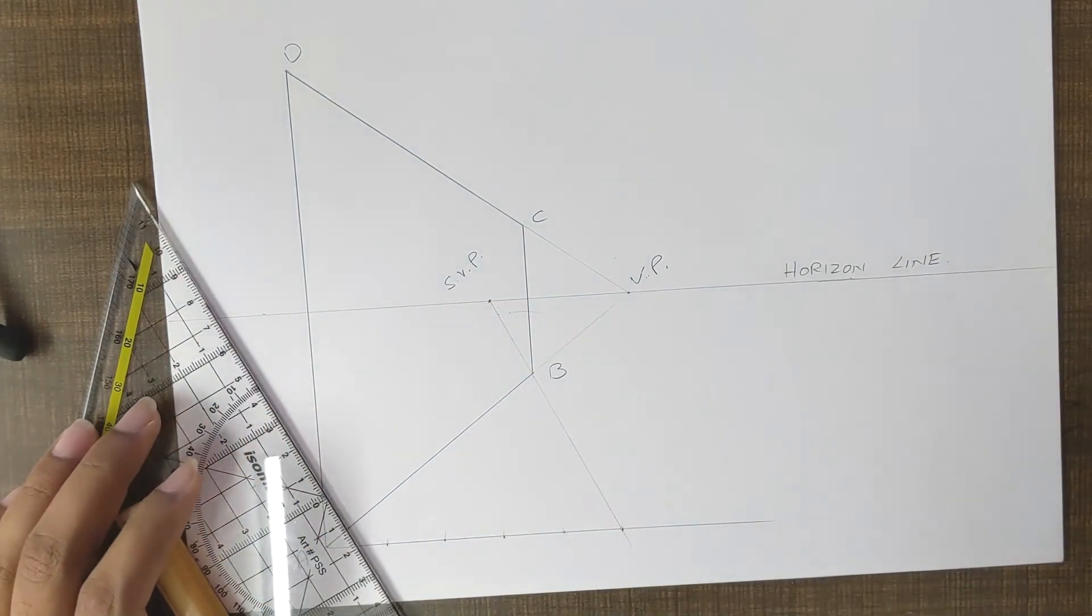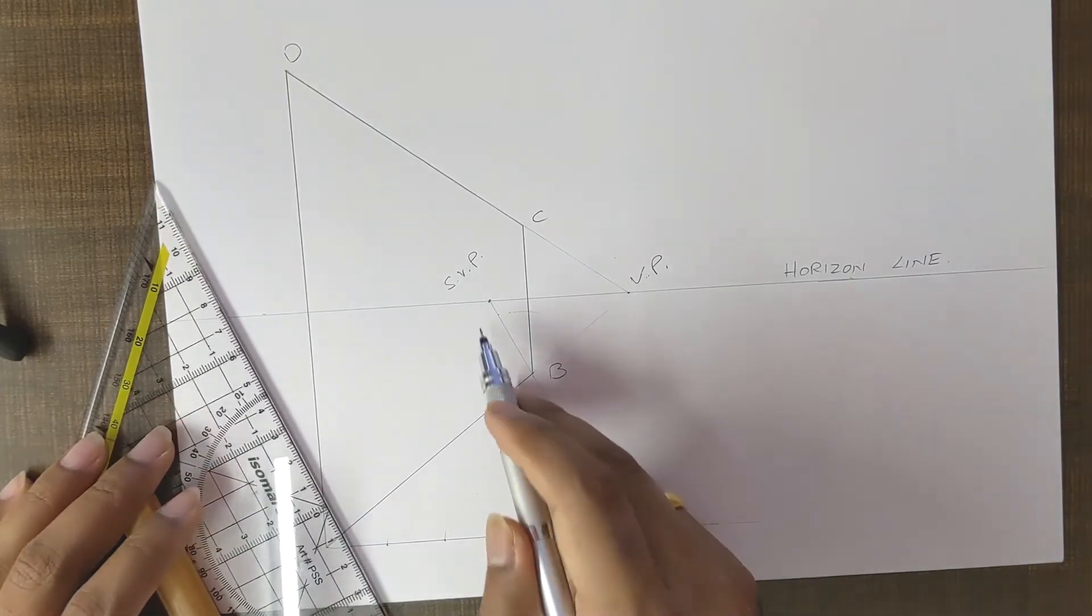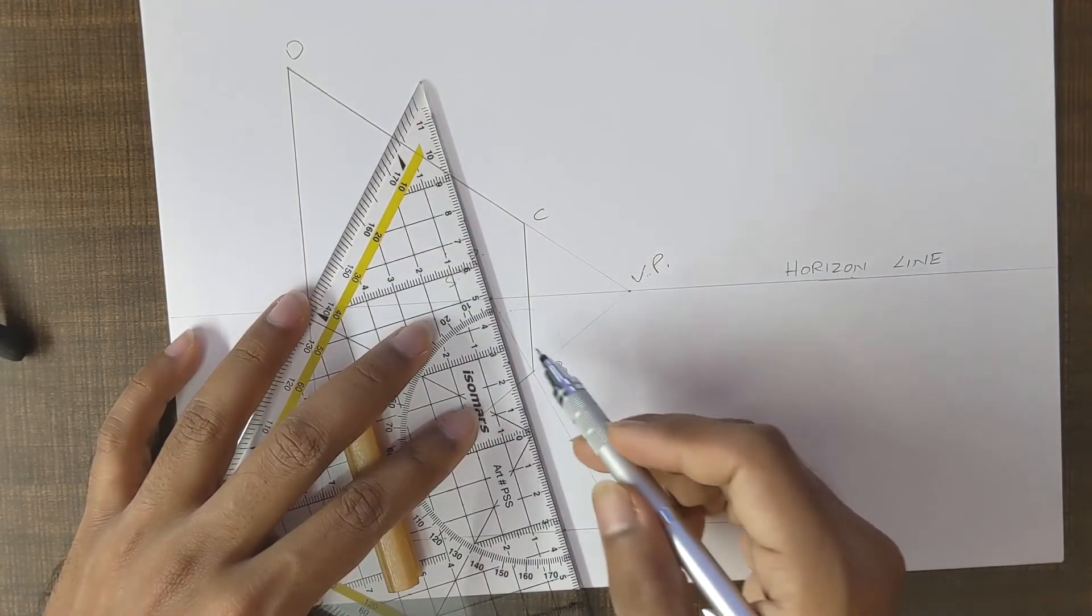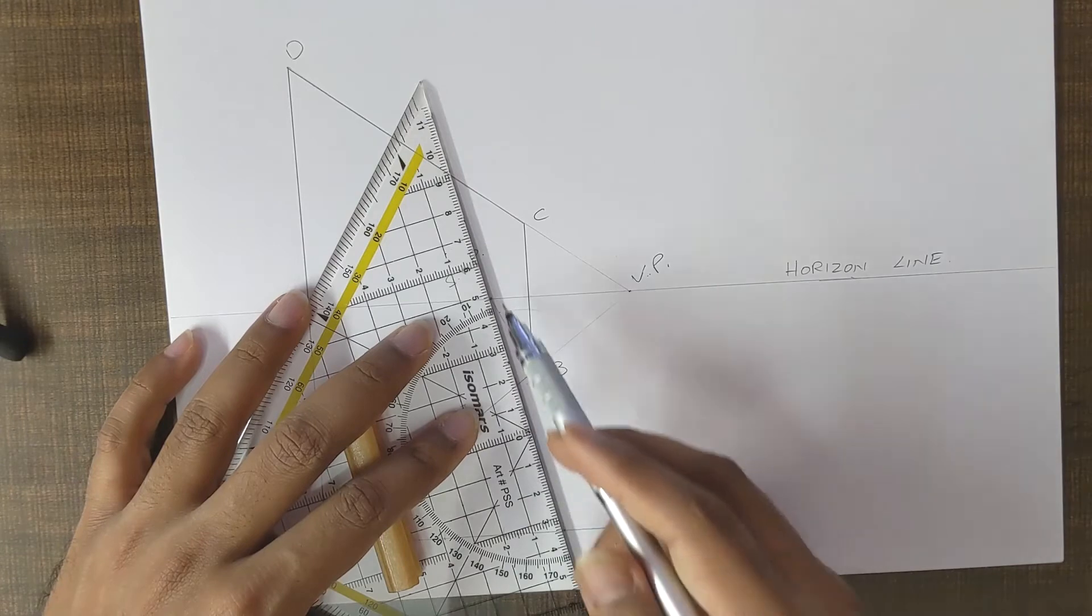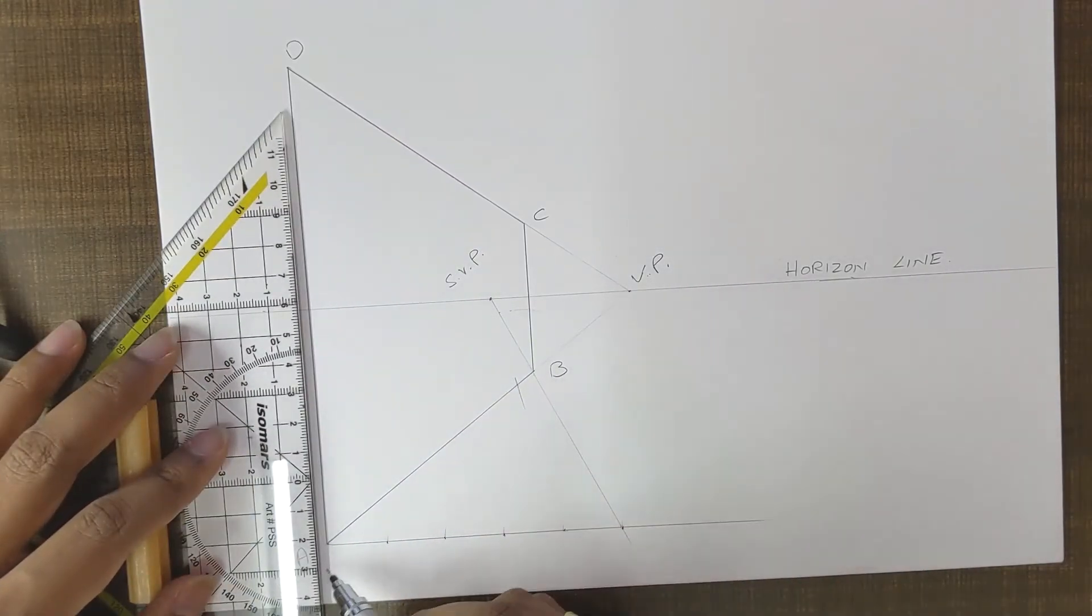Now all that we have to do is take each of these points and connect to the special vanishing point. Once we do that, we get intersection points along the line AB.